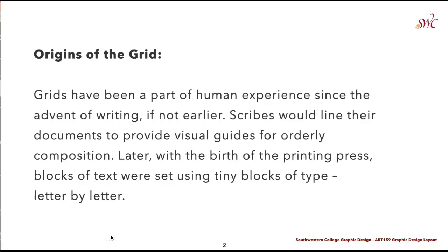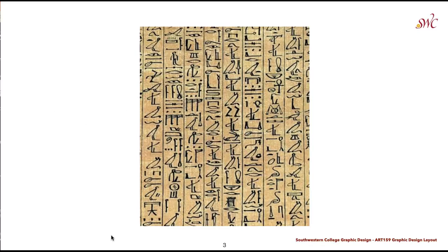The origins of the grid have been a part of the human experience since the advent of writing, if not even earlier. Scribes would line their documents to provide visual guides for orderly composition, and later with the birth of the printing press, blocks of text were set using tiny blocks of type letter by letter. This example shows scribes creating this sort of layout to contain and organize information, even within ancient scribing.